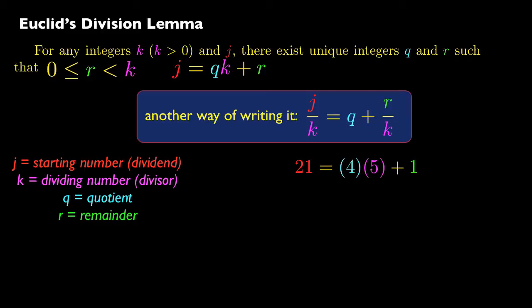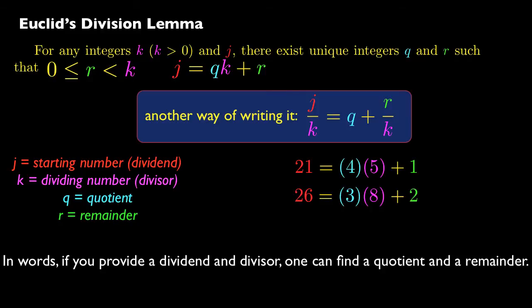So here are some examples of what we mean. 21 could be expressed as 4 times 5 plus 1. So in other words, 21, if that's the starting number, and 5 is, you divide it by 5, and you get 4 with a remainder of 1. And 26 divided by 8 gives you 3 with a remainder of 2. In other words, if you provide any dividend and divisor, you could find a quotient and a remainder, and they're unique.